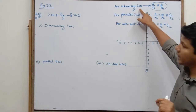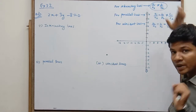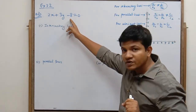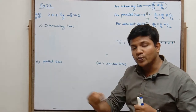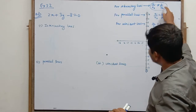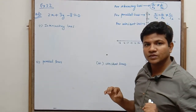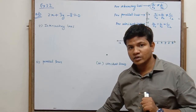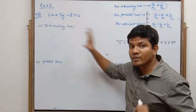We know that for intersecting lines, the condition is a1/a2 is not equal to b1/b2. So here we have a1, b1, c1. We have to give a2, b2, and c2 in such a way that this ratio is not equal. So a linear equation in two variables where a1/a2 is not equal to b1/b2 will give intersecting lines.